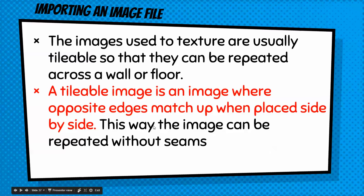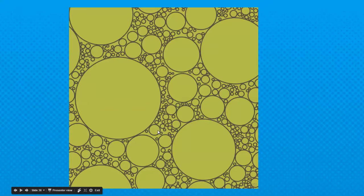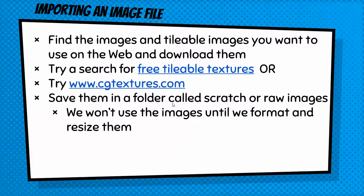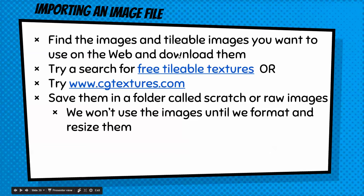Write this down: a tileable image is an image where opposite edges match up when placed side by side. This way the image can be repeated without seams. For example, if I took this picture and put a copy of it over here, you could see this curve would repeat right here and it would tile very nicely. So find images that you want for your walls, doors, benches, and all that stuff.